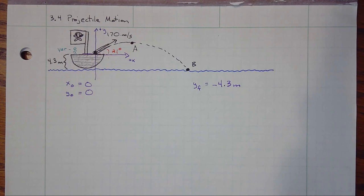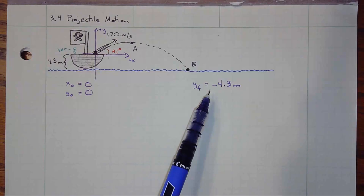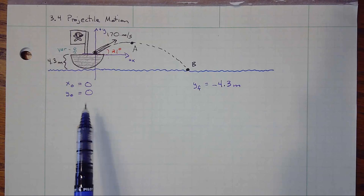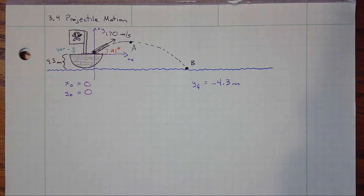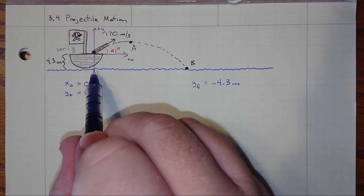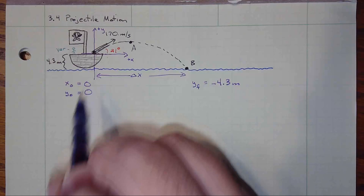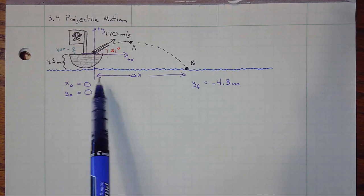We didn't have to choose it this way. We could have chosen a different point on the surface of the water as our origin, in which case y_final would be 0 and y_initial would be positive 4.3. No matter what we choose, we should still get the same answer. Having defined this coordinate system, we've started to write down some of our variables. If our object starts at x₀ equals 0, we have some x_final, and in general a displacement in the x direction — delta x — which is our total horizontal motion, or what we sometimes call the range.